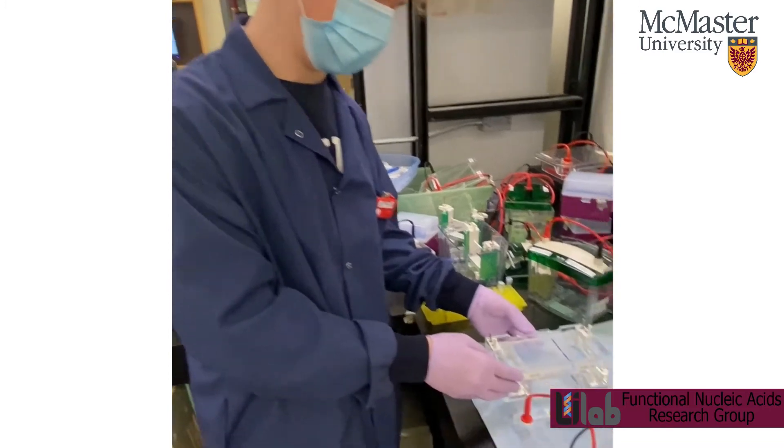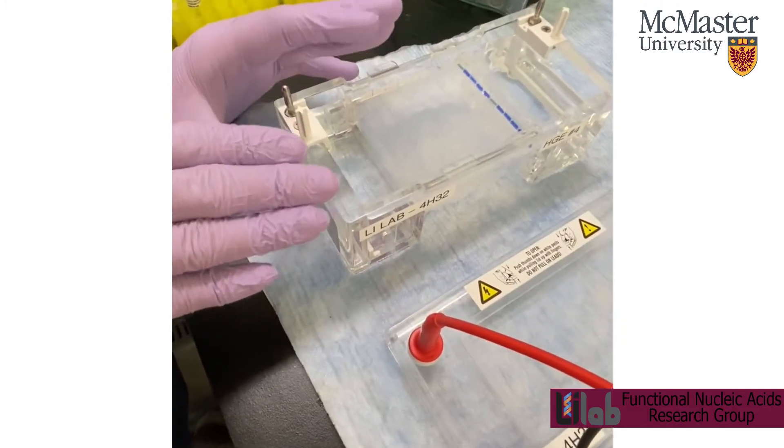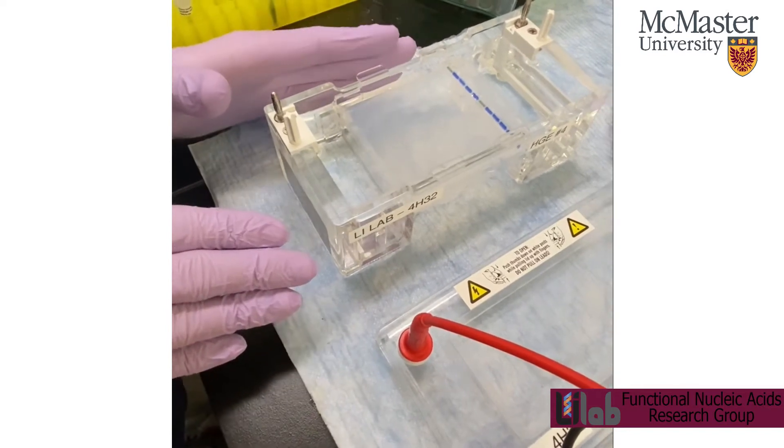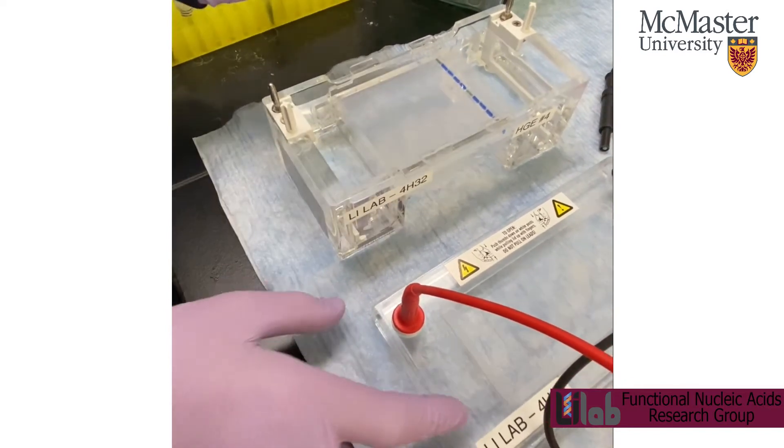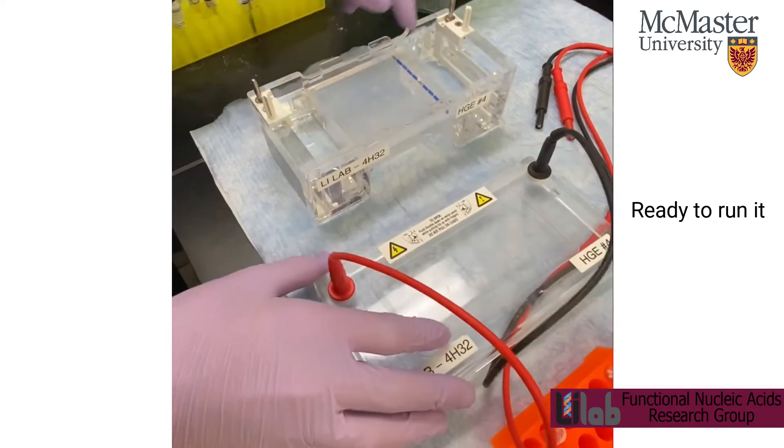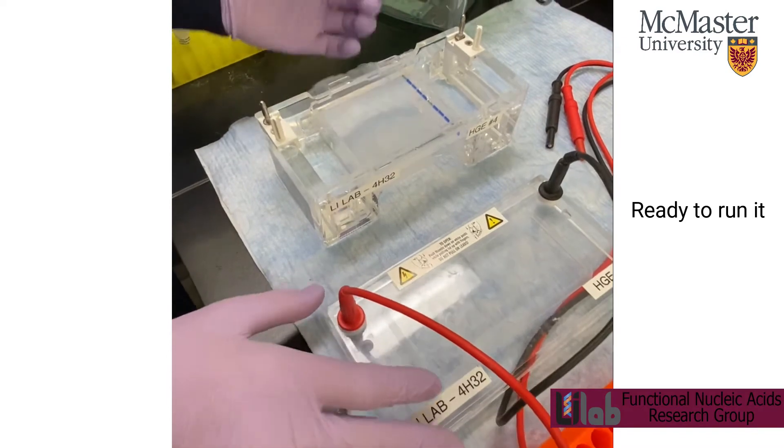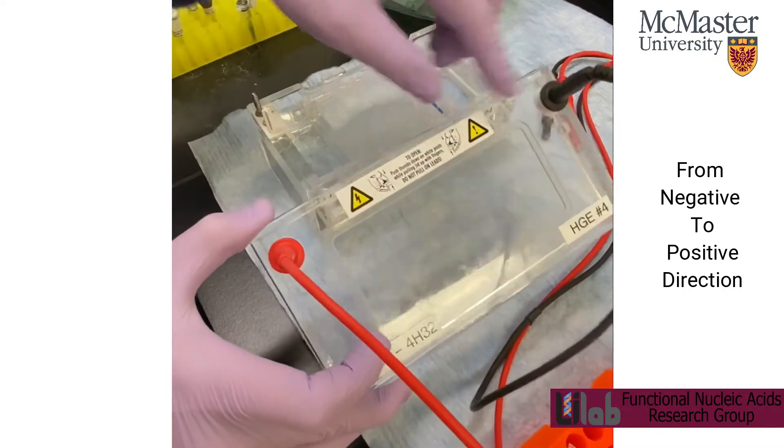So after the gel is finished polymerizing, I put it in the casting apparatus. And then I put the 1x TBE in just until it covers the gel. And then I loaded my sample. So now I'm ready to run it. So I'm going to make sure that the gel is in the correct direction. So we'll be going from negative to positive or black to red.